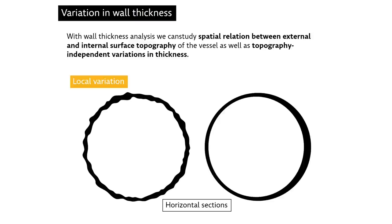The study of local wall thickness variability can be viewed as a contextual topographical analysis of both surfaces, which increases the information value of the topographical analysis. The global variation refers to the difference in wall thickness within the entire vessel. It reflects forming history even when topography caused by roughing out of the vessel was entirely obliterated by subsequent stages of manufacture.